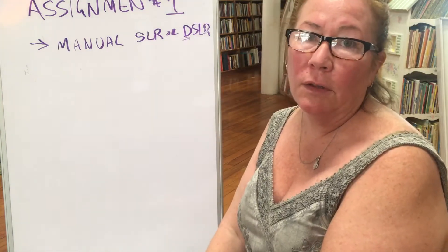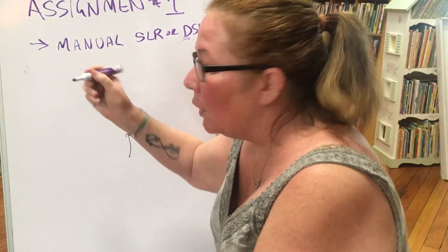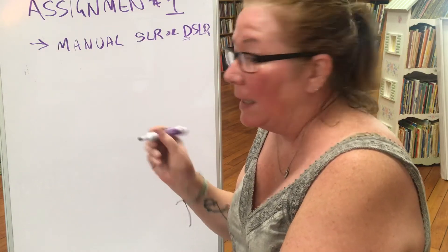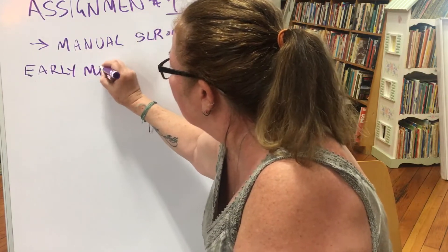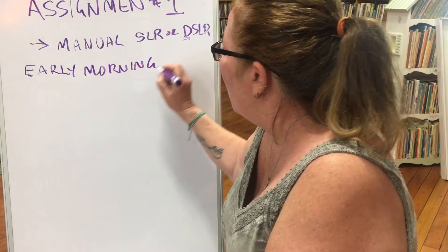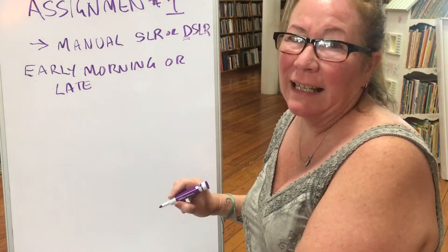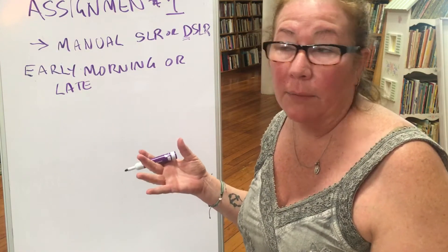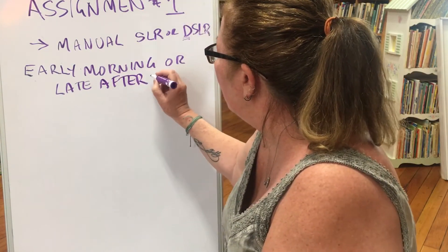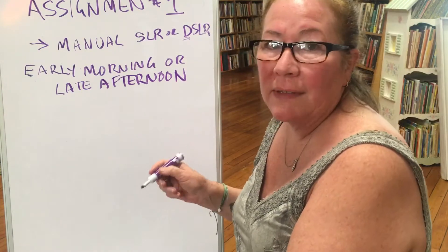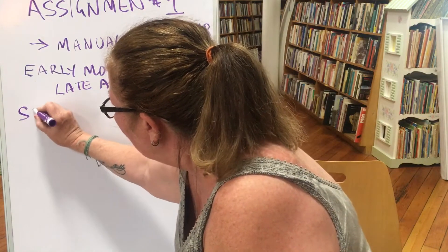For a manual camera, you're going to start off with the sunny 16 rule. I want you to take these photographs either early morning or very late afternoon — the sun's still out but it's low in the sky. The time of day is very important for the success of these. So you're going to shoot early morning or late afternoon, like six or seven o'clock this time of year, which is summertime.